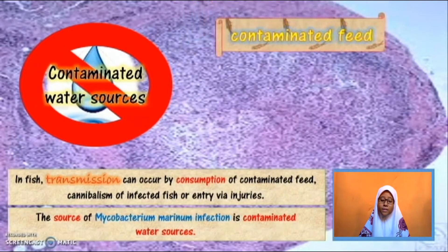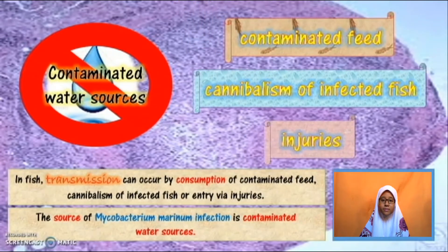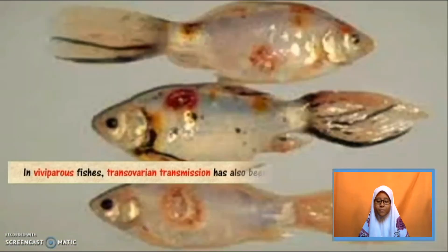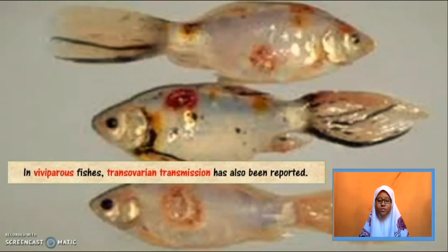In fish, transmission can occur by consumption of contaminated feed, cannibalism of infected fish or abrasive injuries. Meanwhile, in viviparous fishes, trans-ovarian transmission has also been reported.